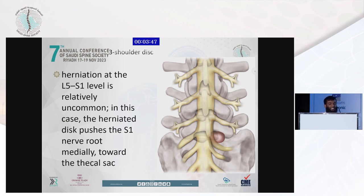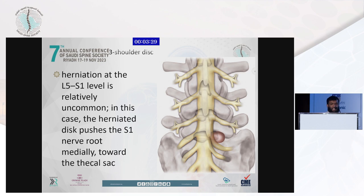The other scenario is herniation at the level of the shoulder. This is uncommon at L5S1. In this case, the herniated disc pushes the S1 nerve root immediately toward the thecal sac, which will obliterate the working space. The disc becomes lateral and behind all the structures — the nerve root and the thecal sac.